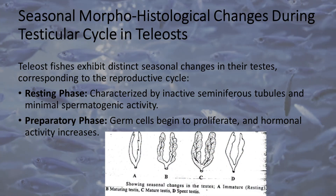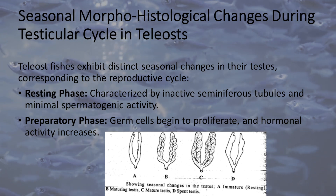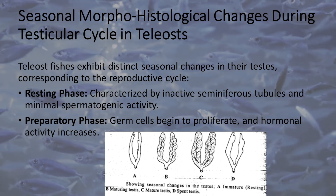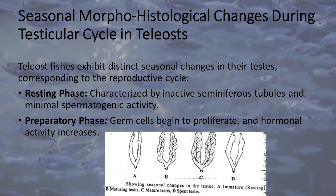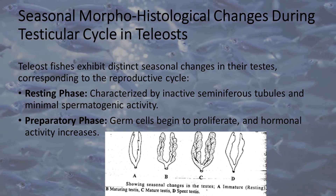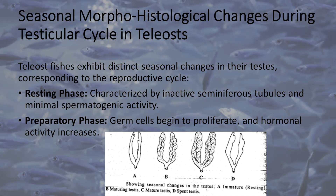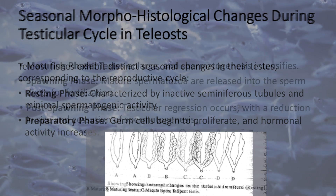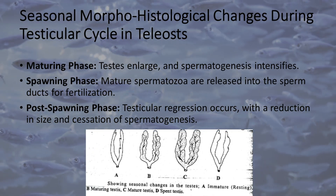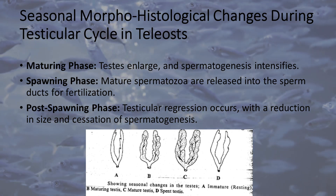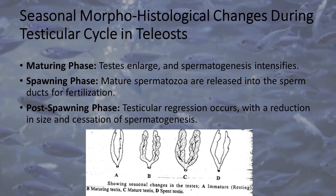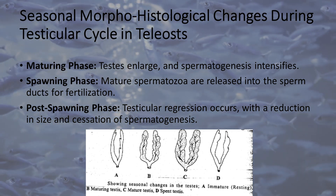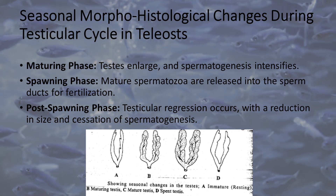Seasonal Morphohistological Changes During Testicular Cycle in Teleosts. Teleost fishes exhibit distinct seasonal changes in their testes, corresponding to the reproductive cycle: Resting phase — characterized by inactive seminiferous tubules and minimal spermatogenic activity; Preparatory phase — germ cells begin to proliferate and hormonal activity increases; Maturing phase — testes enlarge and spermatogenesis intensifies; Spawning phase — mature spermatozoa are released into the sperm ducts for fertilization; Post-spawning phase — testicular regression occurs, with a reduction in size and cessation of spermatogenesis.